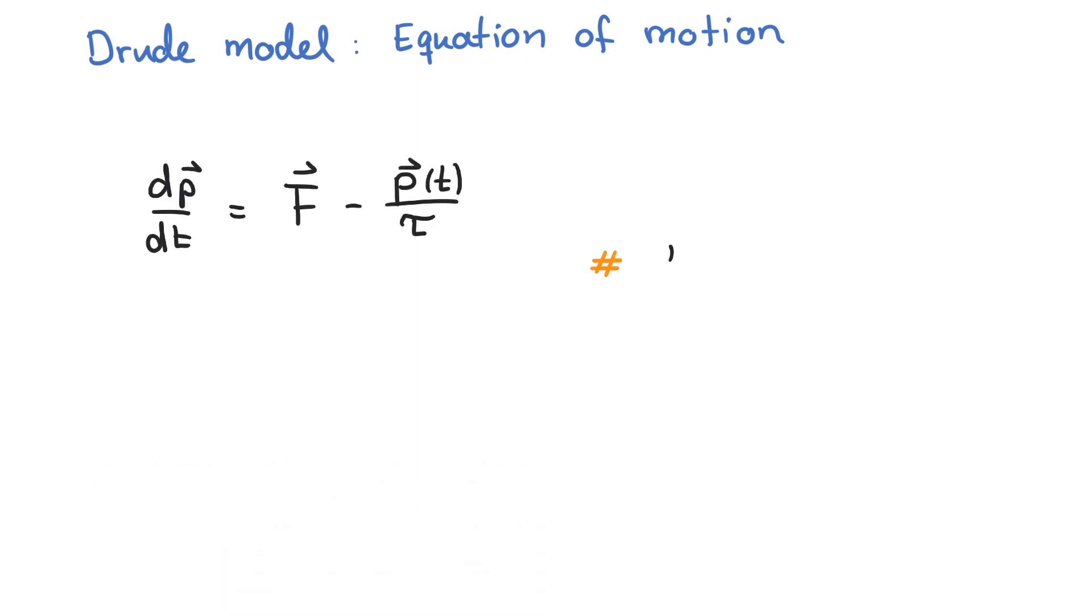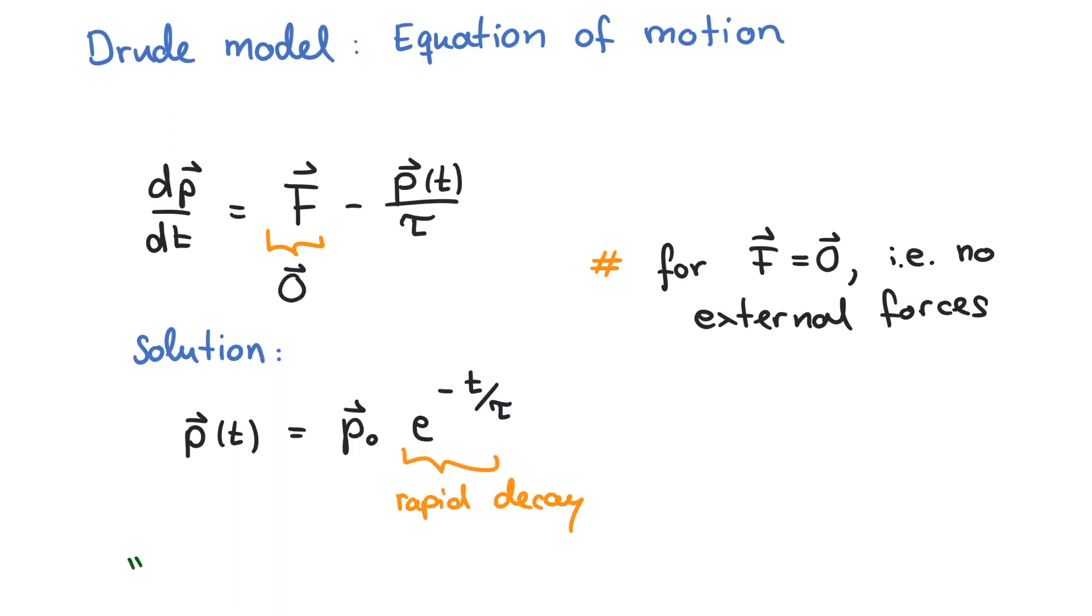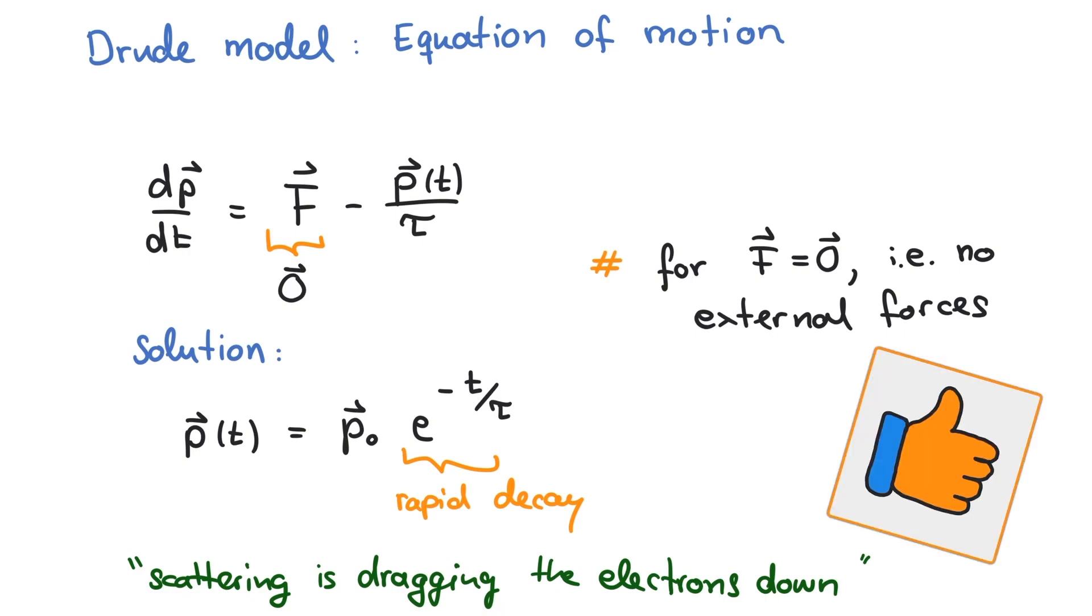When the force is zero, the solution becomes obvious. An exponential ansatz results in a momentum p of t that starts out at p zero and rapidly decays. It is as if the scattering is dragging the electron down, simply bringing them to a hold within some phenomenological time scale tau. That's pretty much it.